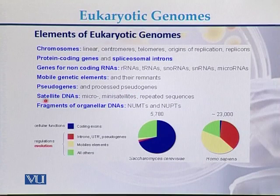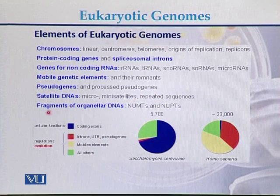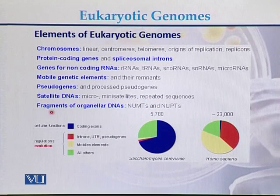On the eukaryotic genome there is also satellite DNA. Satellite DNA can be in the form of microsatellites, minisatellites, and repeated sequences. In eukaryotic genomes we also see fragments of organelle DNAs.